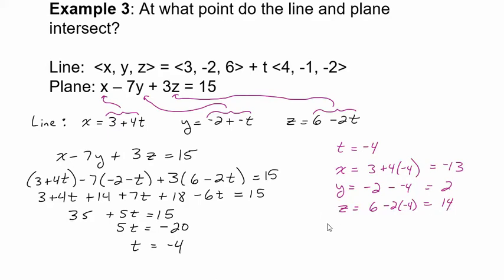So I get the point negative 13, 2, 14. We know this point is on our line because we just found that that's the point on our line when t equals negative 4. But is this point on our plane? Well, there's an easy way to check.